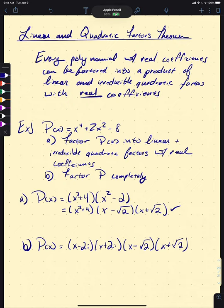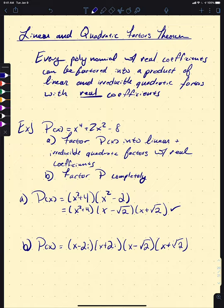That completes our study of complex zeros of polynomials and wraps up instruction for this week. Next week we'll dive into rational functions — what happens when we divide one polynomial by another — and how to graph them.